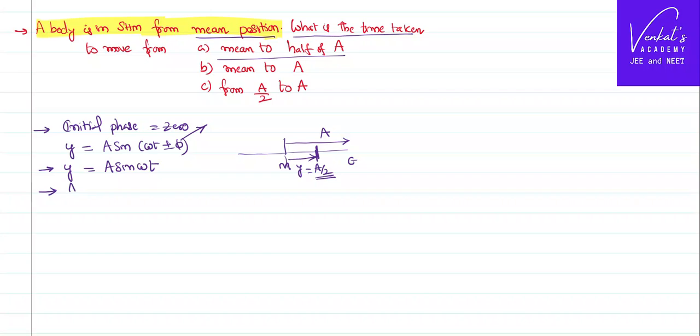So in the place of y I shall write a by 2. a by 2 equal to a sin omega t. a cancels, so 1 by 2 equal to sin omega t. You know sine of something is 1 by 2, that is when the angle is equal to 30 degrees.